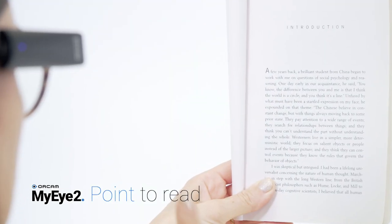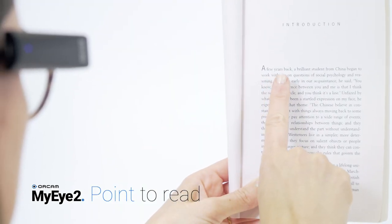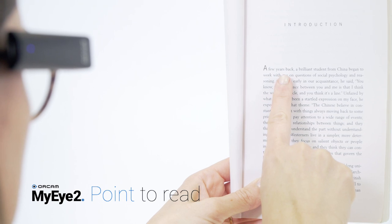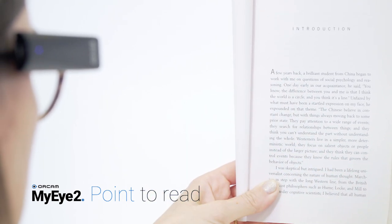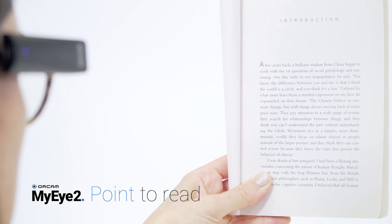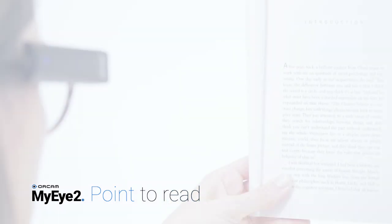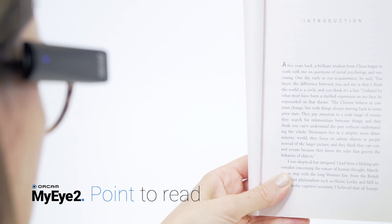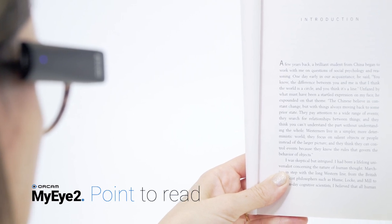Point at the text with your pointing finger extended upwards and fingertip facing the page. You will hear a double beep sound indicating your finger has been detected. Remove your hand from the text so the camera can capture it. Now your device will read the text to you from the top of the section to which you have pointed.